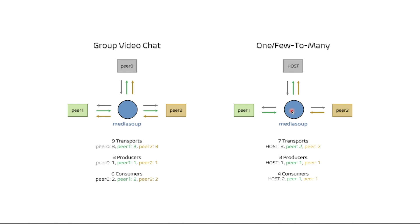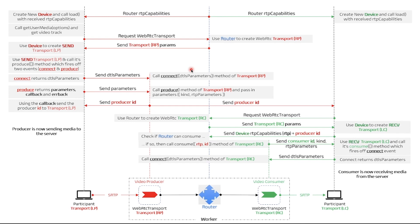On the MediaSoup server for the few-to-many scenario, we will need to create seven transports — three for the host and two for each of the remaining peers — three producers because each peer is streaming media, and four consumers: two for the host and one each for the two peers. In this case, the peers only receive media from the host, while the host receives from all the peers. Let us now look at a sequence diagram for a typical one-producer and one-consumer scenario.